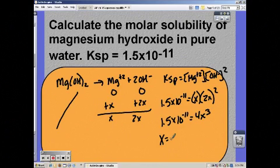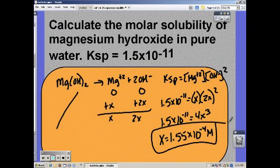Divide by 4, cube root it. And you get 1.55 times 10 to the negative 4th. And remember your units of molarity.